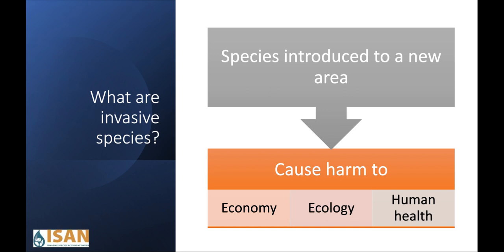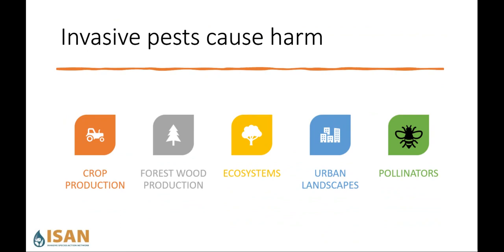Pests are considered a type of invasive species and many pests are simply an insect that has been introduced to a new area and causes harm. Some pests that are introduced can cause specific kinds of damage — they can kill fruits and vegetables grown by farmers, damage and kill trees in the forest, kill trees in city neighborhoods, and some pests can even destroy pollinators like honeybees.